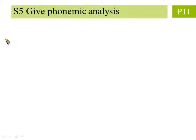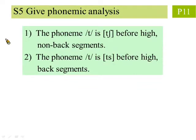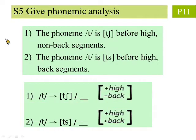Step 5: We now establish the rules for deriving the phonetic representations from the phonemic representation. If we describe the rule in words, we get: the phoneme /t/ is realized as [ch] before high, non-back segments; and the phoneme /t/ is realized as [ts] before high, back segments. If we rewrite the rule in notations, it is as shown below.